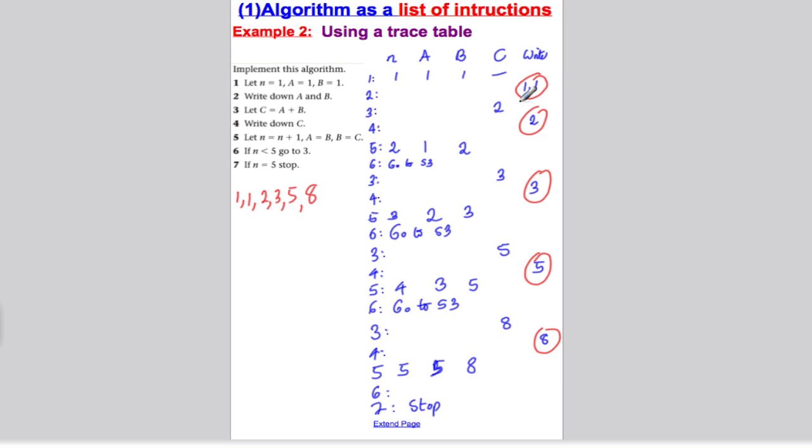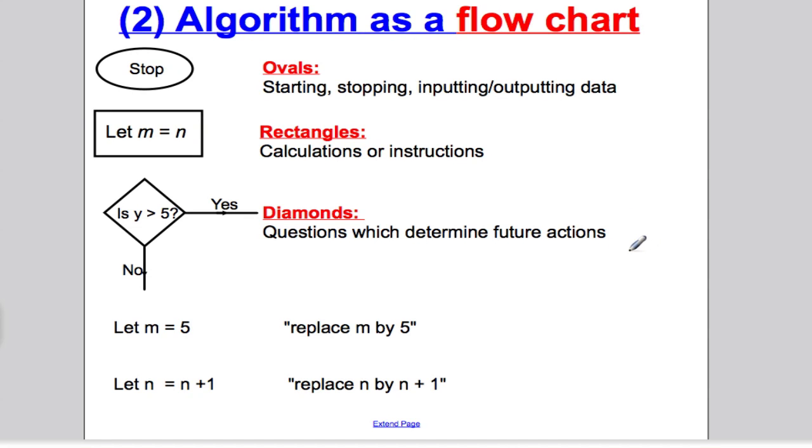Let's move on to an algorithm as a flow chart, the second way we can write an algorithm. A couple of bits of terminology and pictures you need to know. Whenever you see ovals, that's telling you a start, a stop, or an input and output data. When you see rectangles, that's telling you to do a calculation or an instruction. And diamonds are questions which help you determine what way you go in the flow chart. If you ever see let N equals five or let N equals N plus one, that just means replace N by five in that case, or replace N by a number that's one bigger than N.